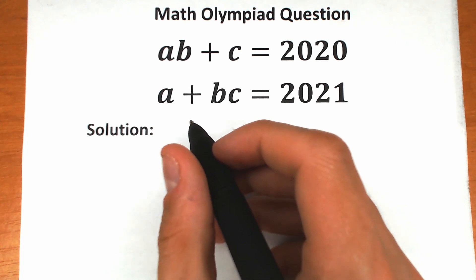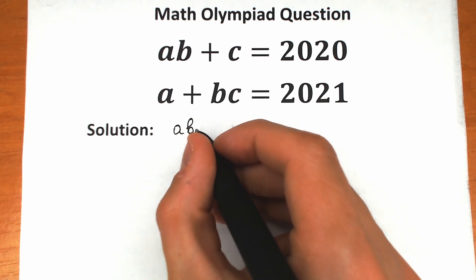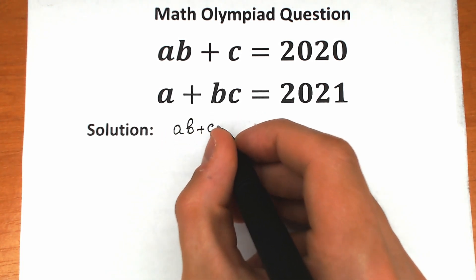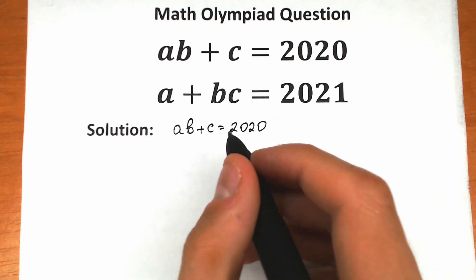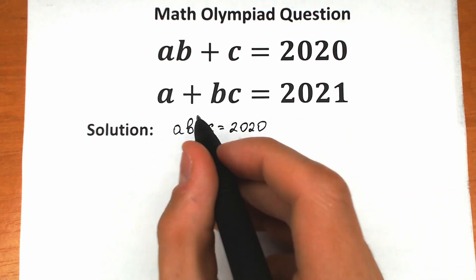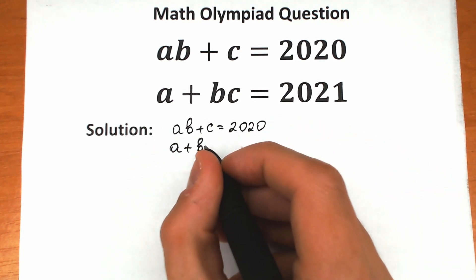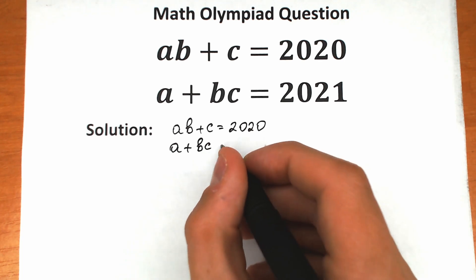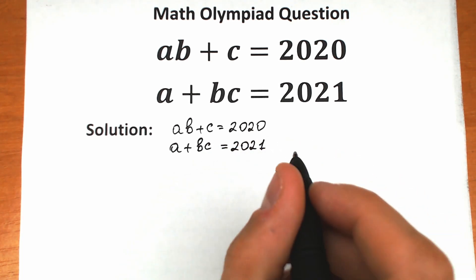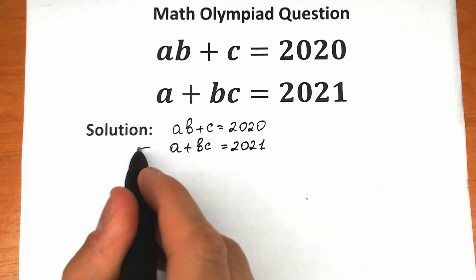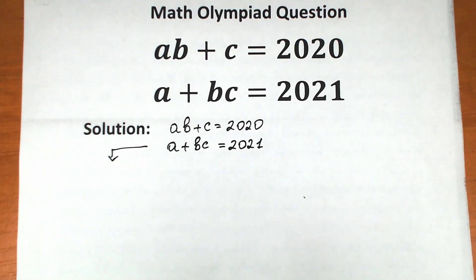First of all, let's rewrite our challenge. We have ab plus c equal to 2020, and in the second equation we have a plus bc equal to 2021. Let's start to solve this on the left-hand side, because I have more space there.